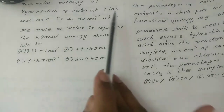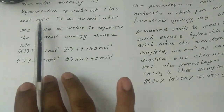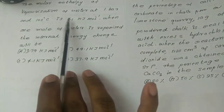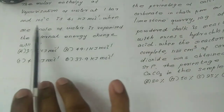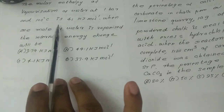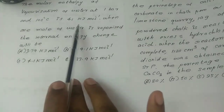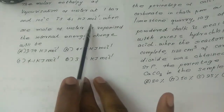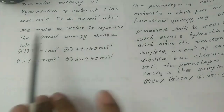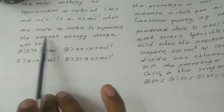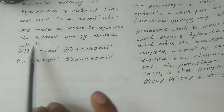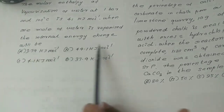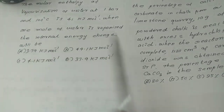Question 1: The molar enthalpy of vaporization of water at 1 bar and 100 degree Celsius is 41 kJ mol raised to minus 1. When 1 mol of water is vaporized, the internal energy change will be?